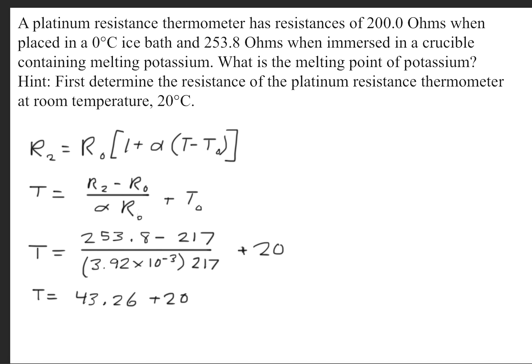Now this time we'll rearrange and solve for the temperature. And we'll get that the temperature is equal to R sub 2 minus R0 divided by alpha times R0 plus the initial temperature.